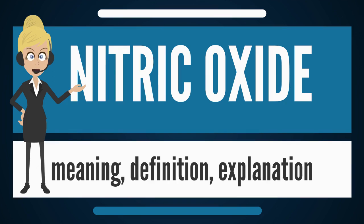Nitric oxide is classified as an extremely hazardous substance in the United States as defined in Section 302 of the U.S. Emergency Planning and Community Right-to-Know Act (42 U.S.C. §11002), and is subject to strict reporting requirements by facilities which produce, store, or use it in significant quantities.